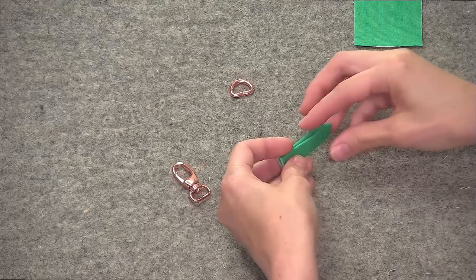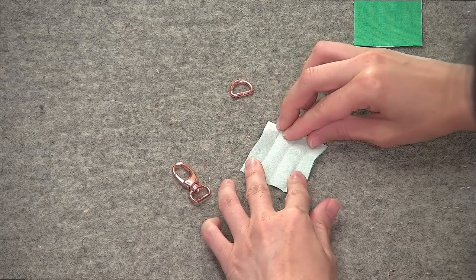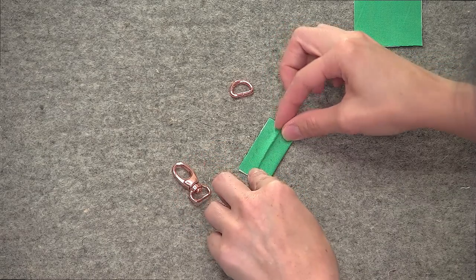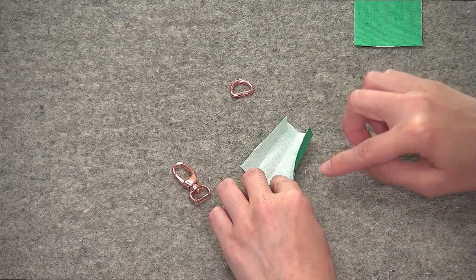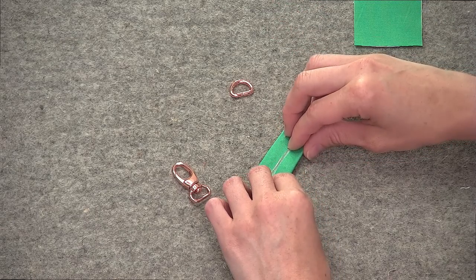So next what I did was I pressed my tab in half, wrong sides together. I opened it out, and I pressed in toward the center crease, which is kind of like making double fold bias tape.